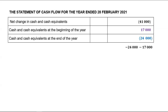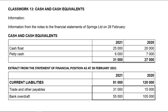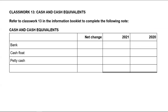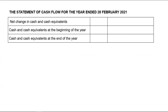This is how you will show it in your statement of cash flow for the year end of the 28th of February 2021. Now let's try classwork 13. Prepare your cash and cash equivalents note, which is your net change in cash and cash equivalents, and show me how it will be disclosed on the face of your statement of cash flow for the year end of the 28th of February 2021.